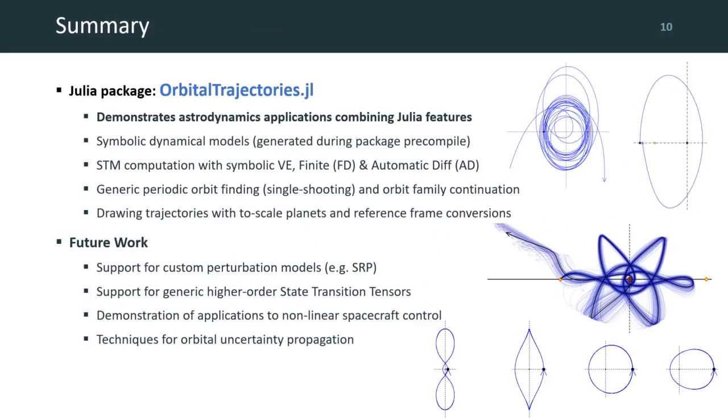Our in-development Julia package, orbital trajectories.jl, thus demonstrates astrodynamics applications that combine the powerful features of the Julia language. We demonstrate ways to improve code development efficiency through symbolic manipulation and generic methods, letting us more easily achieve composable functionality, while still improving on the performance provided by existing tools. I'm currently working on demonstrating some additional support for model composability, including custom perturbations, as well as an extension to higher order state transition tensors, which can be applied to nonlinear controller spacecraft, and to uncertainty propagation techniques.